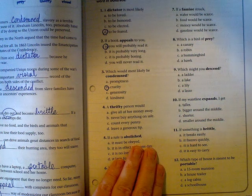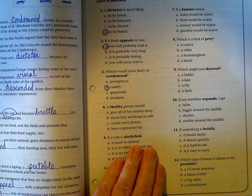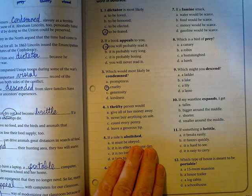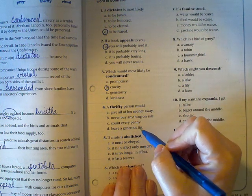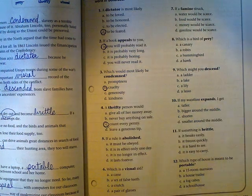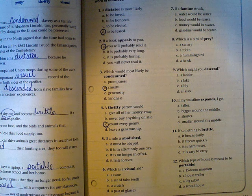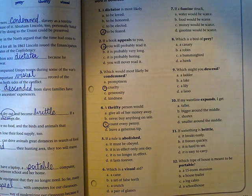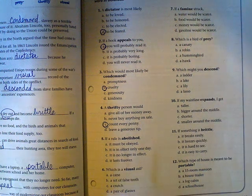A thrifty person would give all their money away? Probably not. Never buy anything on sale? Definitely not. Count every penny? Probably. Leave a generous tip? Now this is one where you may be able to make an argument for some of those, but the best answer for someone who's thrifty is that they count every penny - they don't want to waste anything. So letter C is the only right answer.